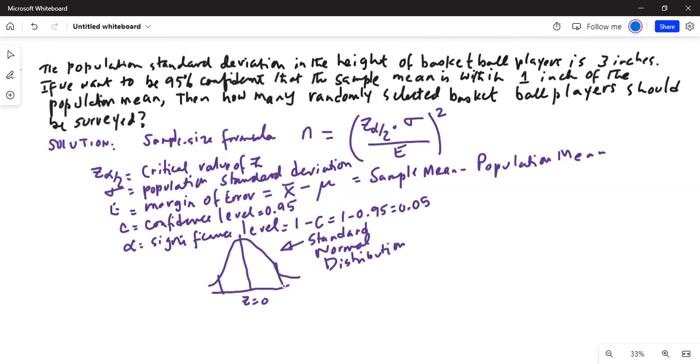For confidence level calculation, the area in the center is c, in this case 0.95. The area in the two tails is equal to 1 minus 0.95, which is 0.05, and that is equal to alpha.